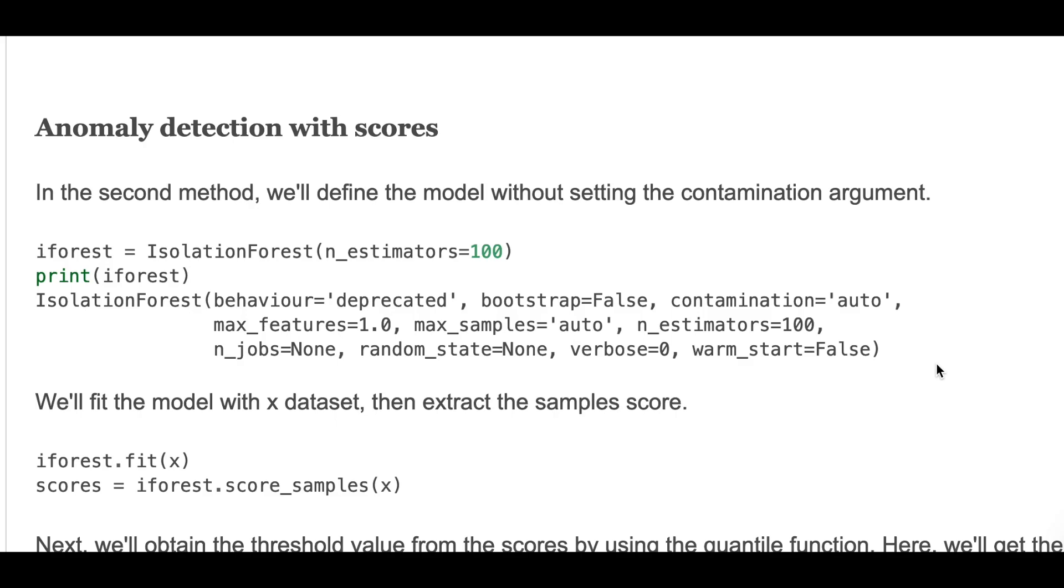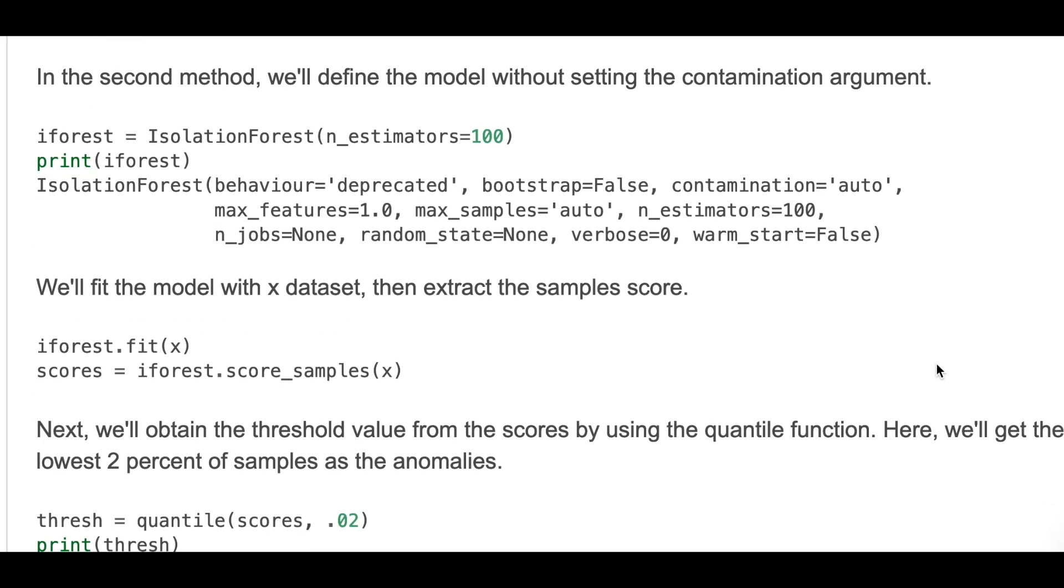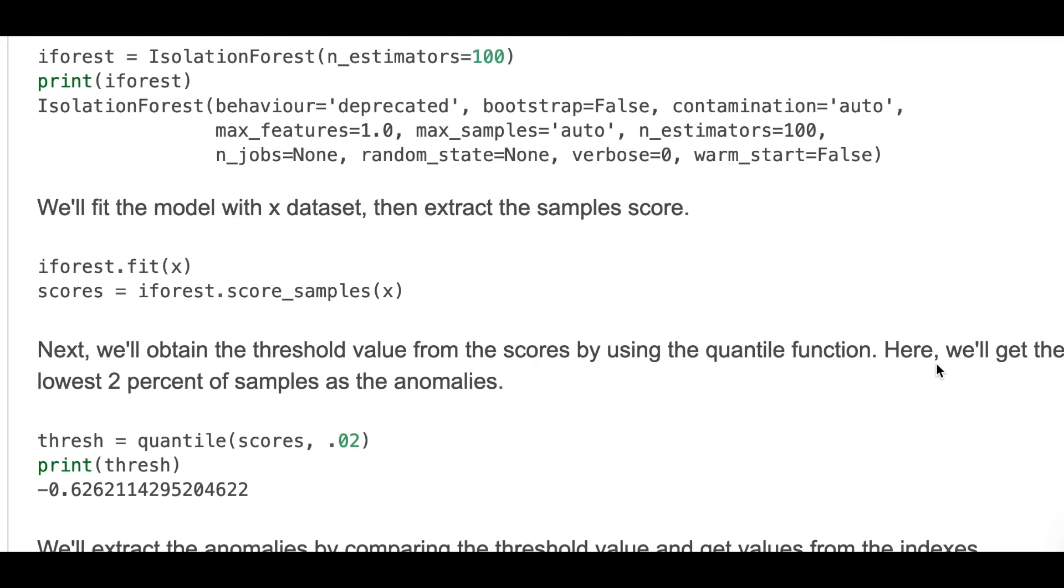Then extract the sample scores. Next we'll obtain the threshold value from the scores by using the quantile function. Here we'll get the lowest 2% of samples as anomalies. Here we define the threshold value.